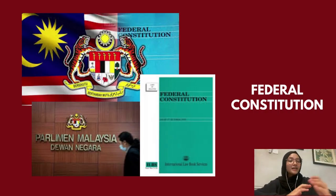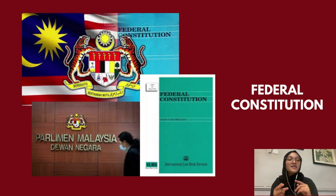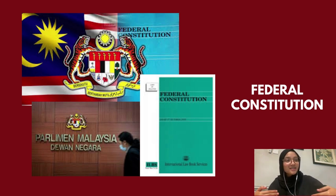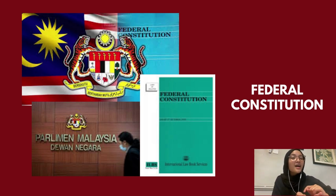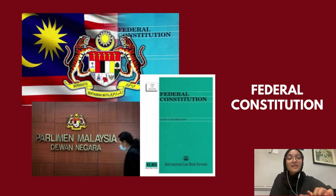The law serves many purposes, among which are to establish rules, maintain order, resolve conflicts, and to preserve the rights and liberties of its people. The state's administrative, legislative, and judicial branches of government, as well as the fundamental liberties of its people, are all governed by a body of legislation known as Constitutional Law. In Malaysia, we have the Federal Constitution of Malaysia, which is the Supreme Law of Malaysia and consists of 183 articles in total. It was first adopted in 1957 as the Constitution of the Federation of Malaya and was revised in 1963 to become the Constitution of Malaysia.